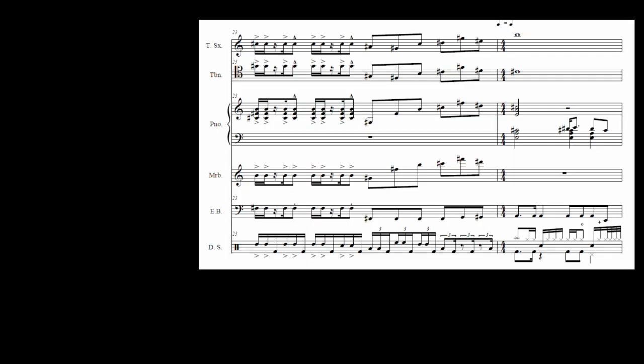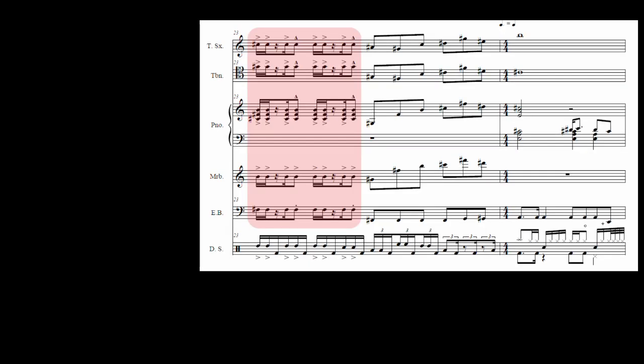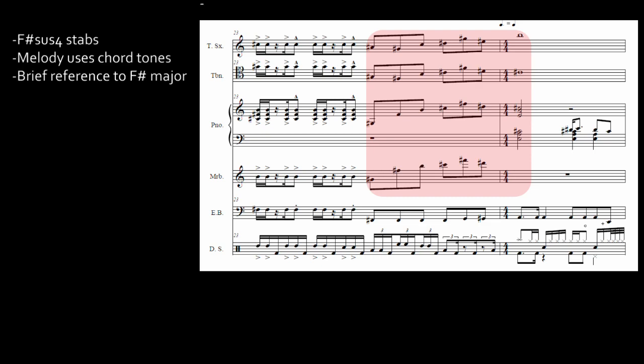The end of this section is punctuated by accented syncopated stabs built on a quartal F# chord, which distinguishes itself from the entirely triadic harmonies that have been used up until this point. A unison melody is constructed from chord tones. The addition of a D# suggests an F# major tonality, and this segues into the next section.